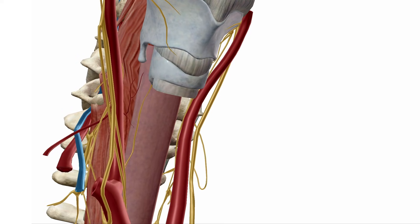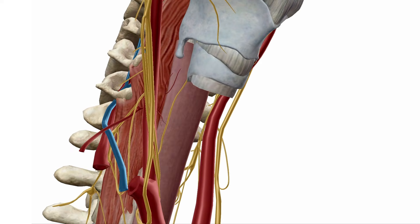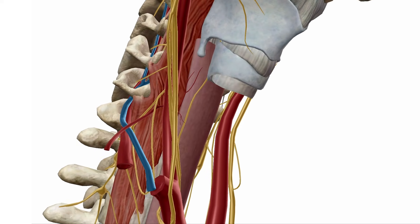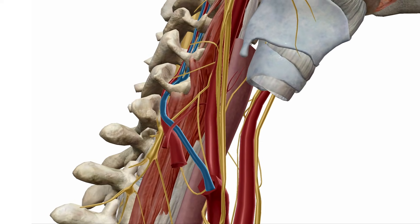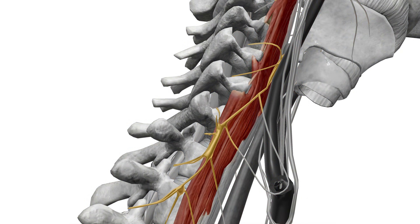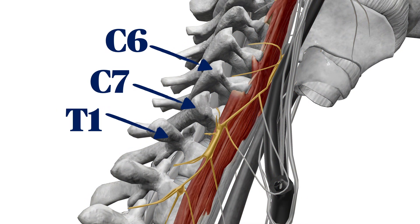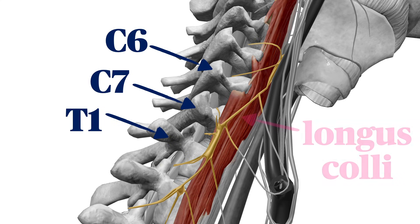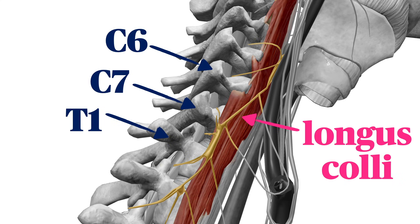The stellate ganglion is formed by the fusion of the inferior cervical ganglion and the first thoracic ganglion — two sympathetic ganglia that lie lateral to the vertebral bodies at the cervicothoracic junction. We see here the transverse processes of C6, C7, and T1, and the longus colli muscle running along the lateral surface of the vertebral bodies. The stellate ganglion is usually found on the surface of the longus colli muscle, lateral to the bodies of C7 or T1.